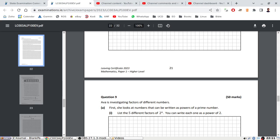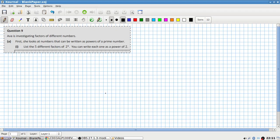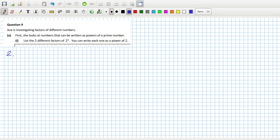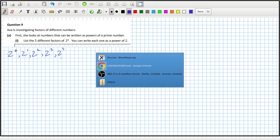Okay, let's see the next one. It's investigating factors of different numbers. First, she looks at numbers that can be written as powers of prime numbers. List the five different factors of 2^4. Okay, well that's 2, 2 squared, I guess count 1. So 2^0, 2^1, 2^2, 2^3, and 2^4 all divide into this.